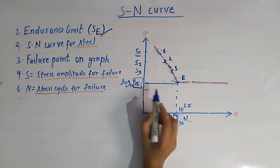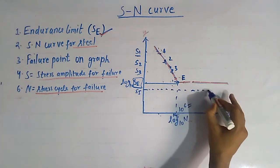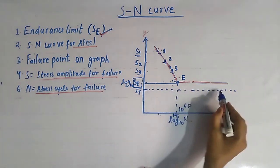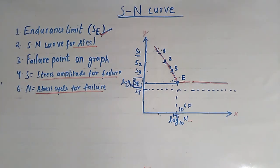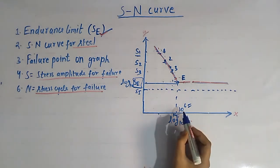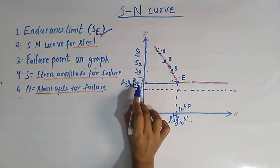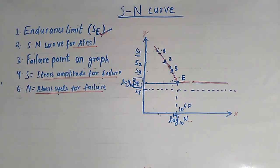Below the value of SE — for example at stress S5 — a horizontal line drawn from S5 to the X-axis will not intersect any portion of the SN curve. So at any stress below SE, the component will not fail; it will survive for an infinite number of cycles. For simplicity, we take 10 raised to power 6 cycles as representing the infinite number of cycles, and the corresponding stress amplitude is called the endurance limit.